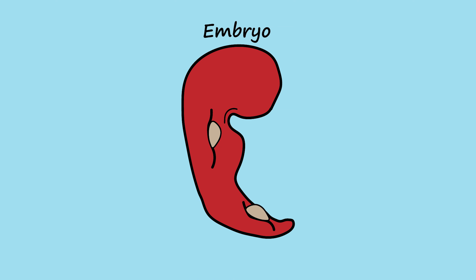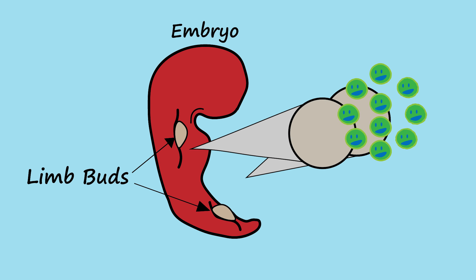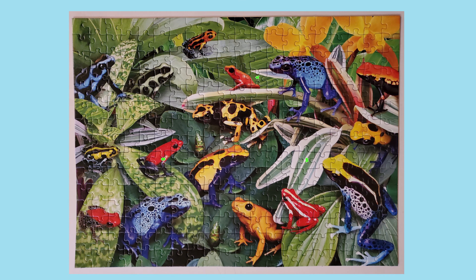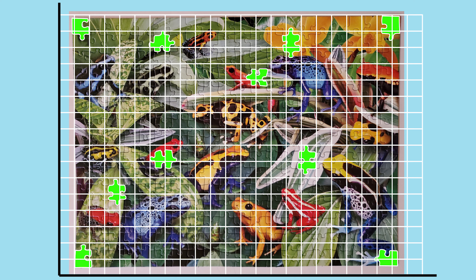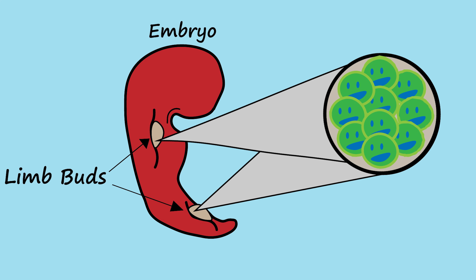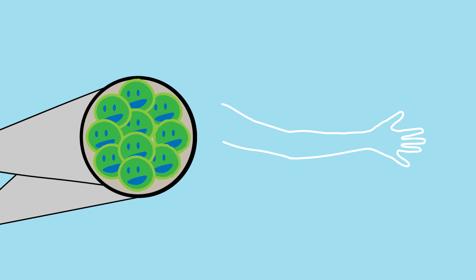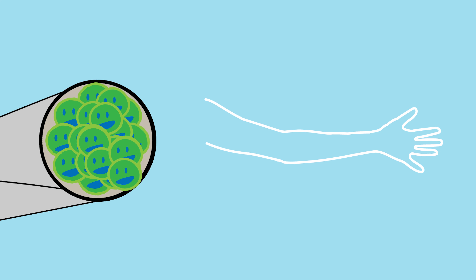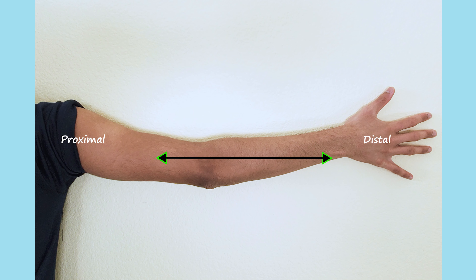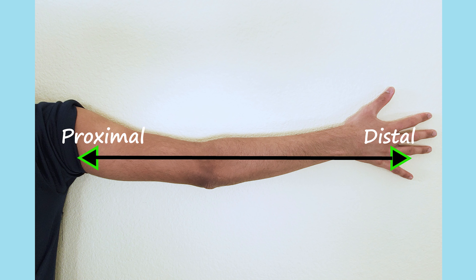We begin on the embryo and structures known as limb buds. Inside is a mass of cells eager to begin their journey to limb development. Like a puzzle has many pieces each at specific locations, our cells will grow to specific spots on our limb respective to three axes.